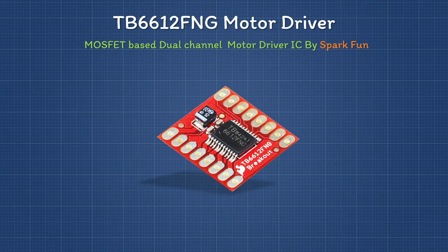Our next driver is the TB6612FNG. It is a MOSFET-based dual-channel motor driver that can independently control two bi-directional DC motors. The MOSFET-based H-bridges are much more efficient than the BJT-based H-bridges used in older drivers such as the L298N or L293D.